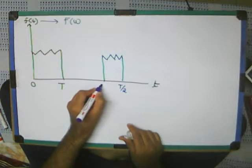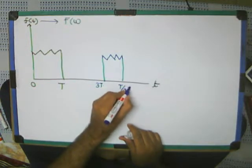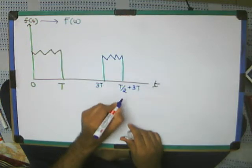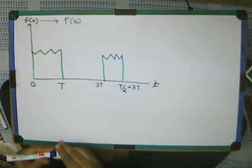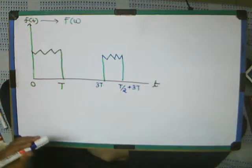This point is 3T plus 3T, and this point is 3T plus T by 2. So I have moved this signal from 0 to 3T.